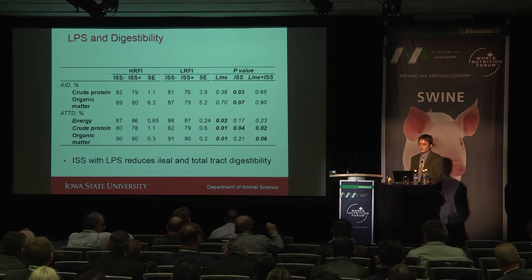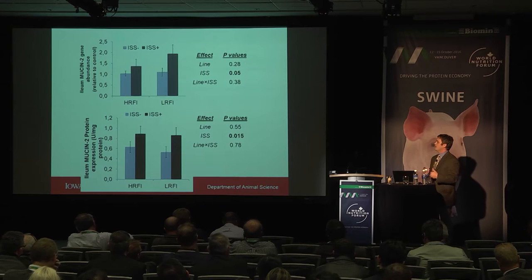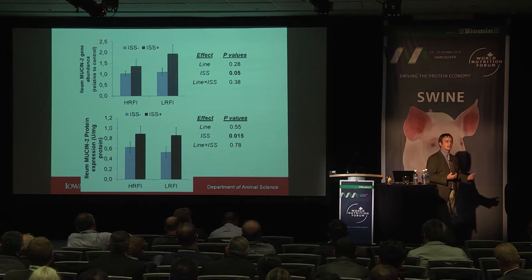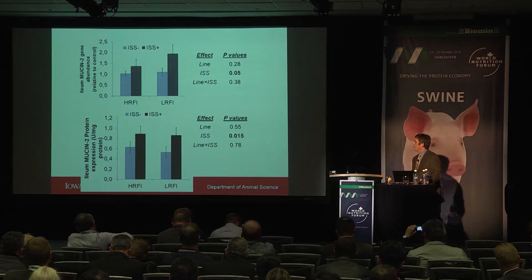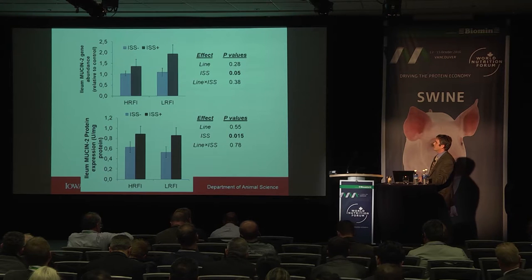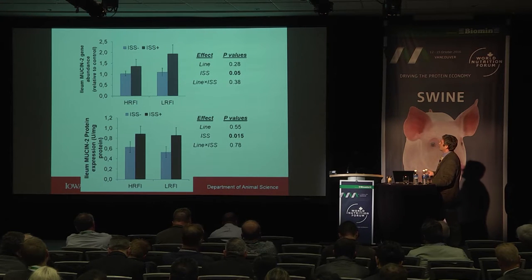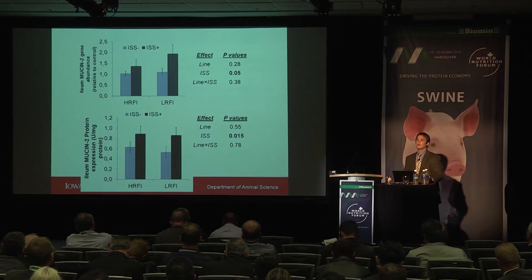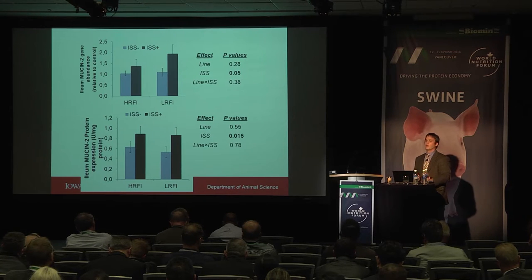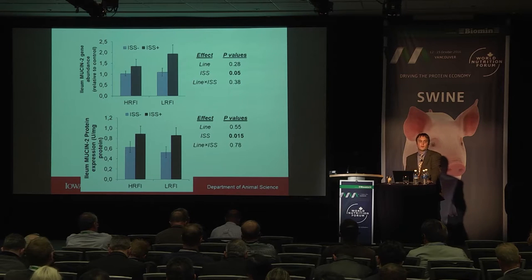We also looked at endogenous losses of proteins: does an immune challenge lead to increased mucus production, and what is its contribution to the amino acid balance of the animal? Looking at ileal mucin 2 gene and protein abundance in mucosal scrapings, irrespective of line, if we immune-challenge pigs via LPS we get a significant increase in both the protein and gene abundance of mucin 2. This suggests increased secretion or increased endogenous losses are occurring, and we're following this up in PRRS and other viruses using nitrogen-free diets.